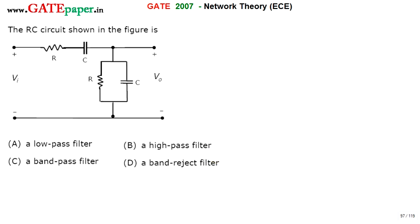We are discussing GATE 2007 EC paper. Look at the RC circuit shown and find which type of filter it is. A filter consists of R and C elements. A low pass filter passes all low frequency signals up to an upper cutoff frequency FH. A high pass filter passes all high frequency signals starting from a lower cutoff frequency FL. A band pass filter passes a band of frequencies. A band reject filter, also called band elimination filter or notch filter, eliminates a certain band of frequencies and passes all others.